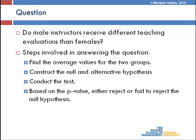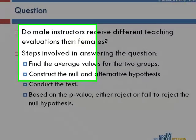The way to go about it is as follows. We first determine the average values for the two groups — the average teaching evaluation for males and the one for females. Once we have the averages, we will know which is higher or lower and whether they are very different or almost similar. Then we construct the null and alternative hypotheses and conduct the t-test. Based on the p-value generated, we either reject or fail to reject the null hypothesis.